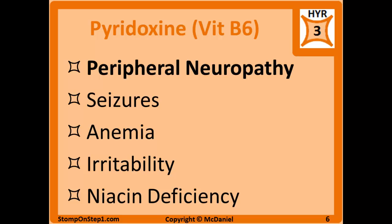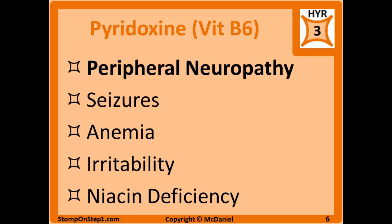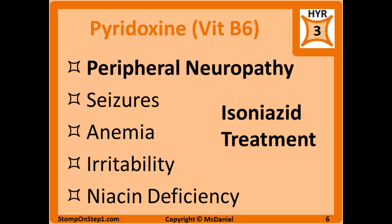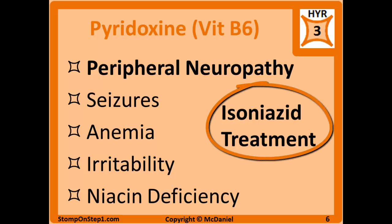Pyridoxine or vitamin B6 is an essential coenzyme in many metabolic reactions. Deficiencies of vitamin B6 can lead to peripheral neuropathy presenting as numbness or tingling, seizures, anemia, and irritability. It can also cause niacin deficiency because vitamin B6 is a cofactor in the creation of niacin. The most common cause of vitamin B6 deficiency is isoniazid treatment for TB, so patients receiving this drug are often given B6 prophylactically.